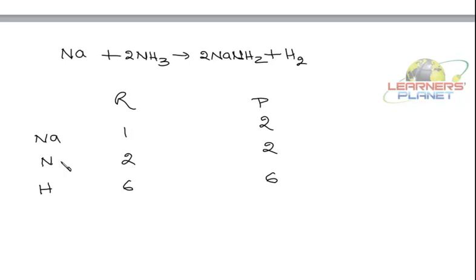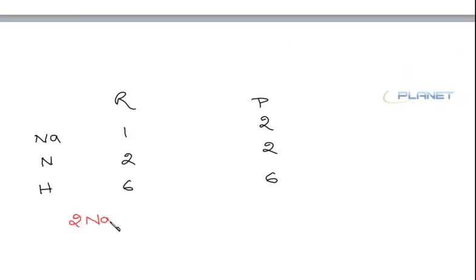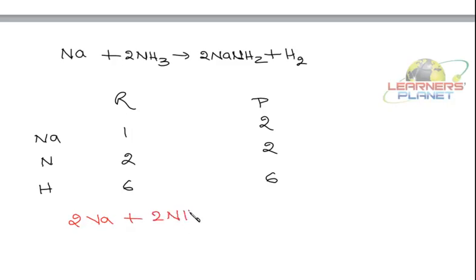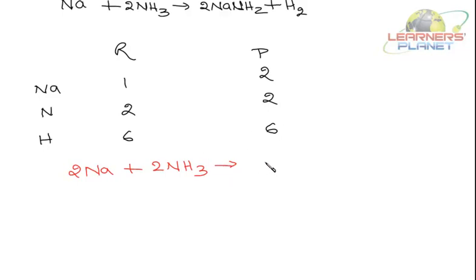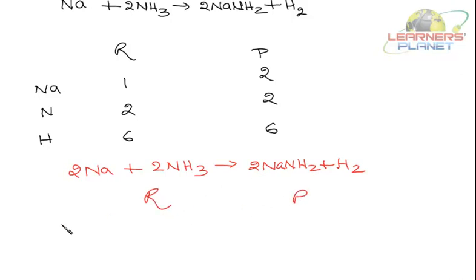What is left to be balanced is sodium. We can just put a 2 in front of sodium. So: 2Na plus 2NH₃ gives 2NaNH₂ plus H₂. Are all the elements balanced now? Is the number of atoms on the reactant side equal to the product side? Let's check: sodium 2 and 2; nitrogen 2 and 2; hydrogen 6 and 6 (4 plus 2). So now our equation is balanced.